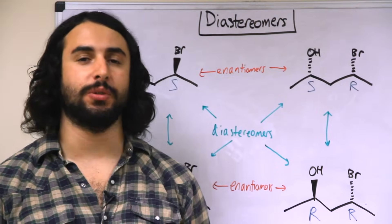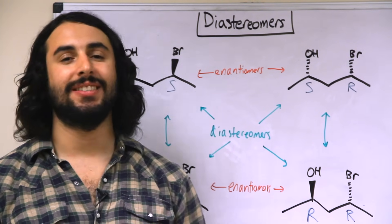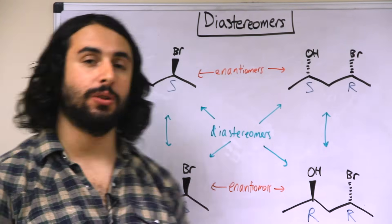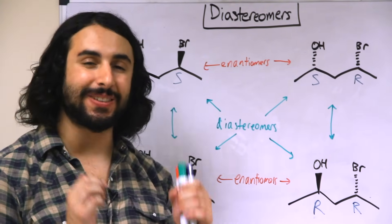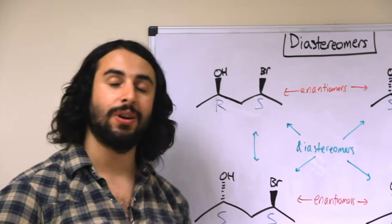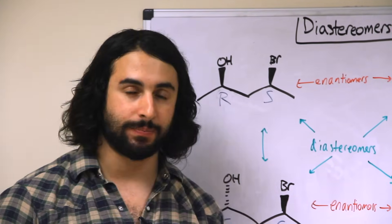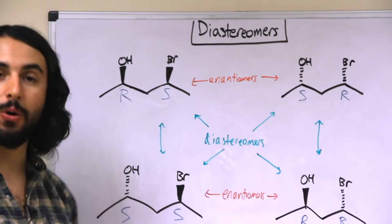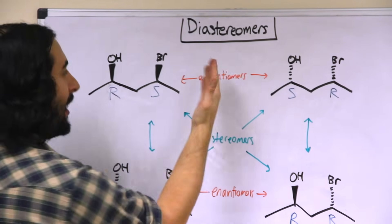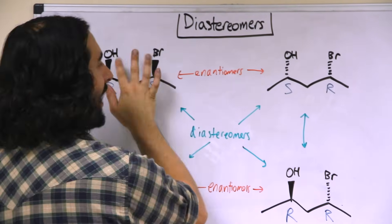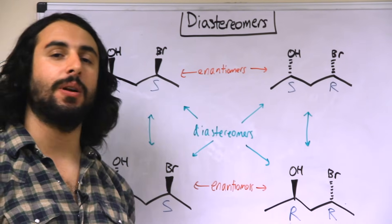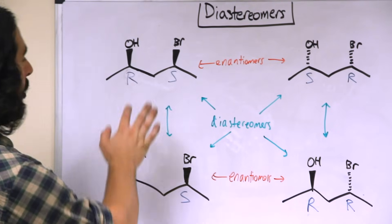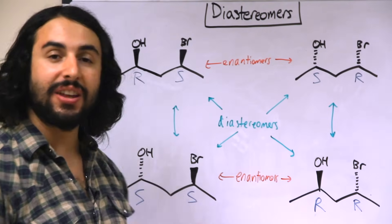There's another stereoisomeric relationship we need to be aware of: diastereomers. Diastereomers are stereoisomers that are not specifically enantiomers — they are molecules that are stereoisomers of one another but not mirror images of each other. For a molecule with two chiral centers — say R and S — the enantiomer is the mirror image, which gives S and R. The enantiomer is essentially the inversion of every stereocenter.